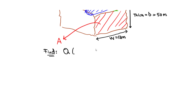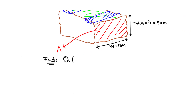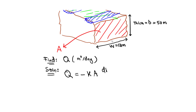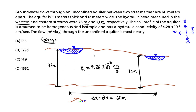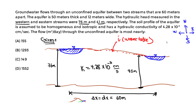We want Q specifically in cubic meters per day, so we have to be careful with units. Darcy's Law: Q = −KA (dh/dx), where dh/dx is the hydraulic gradient — essentially the slope of the water table. In this case, going from the western to eastern stream, the slope is negative because it goes downward. That's the direction water will travel.